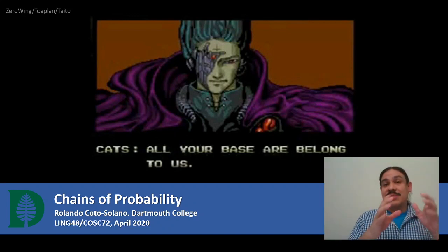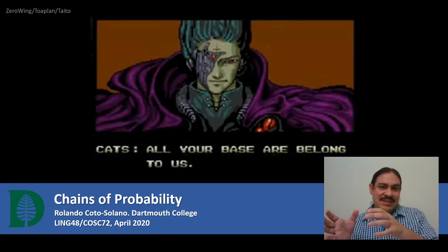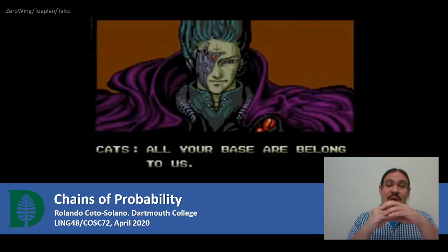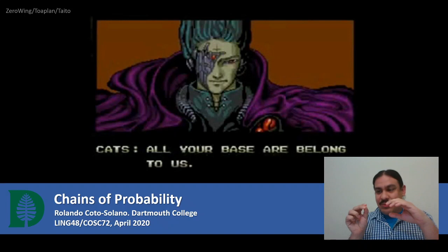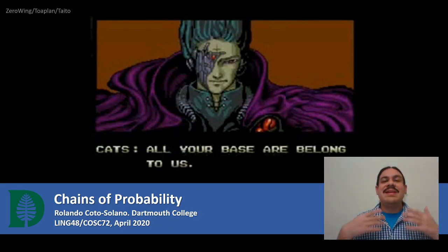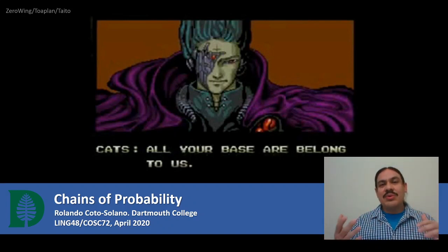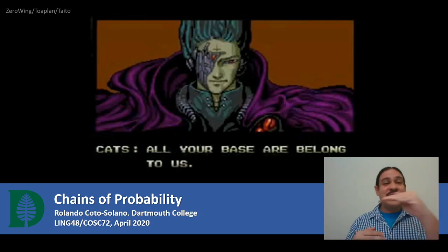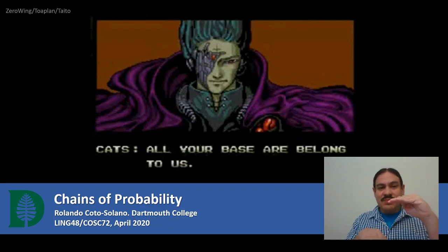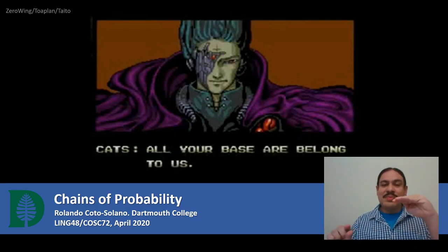In the last video, we looked at the probabilities of unigrams and bigrams, and at the conditional probability of one word given that we had already seen a word before it — essentially the probability of a bigram. In this video, we're going to combine those probabilities to calculate the probability of a sequence of words, of a sentence. Throughout the week, we're going to use those probabilities to distinguish between English sentences we hear all the time, sentences that are poorly formed, and forms that are unusual but that we have heard before, such as: 'all your base are belong to us.'